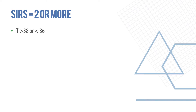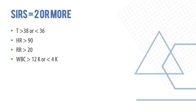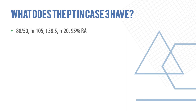SIRS is classified when two or more of the following are present: temperature more than 38°C or less than 36°C, heart rate more than 90, respiratory rate more than 20, or white blood cell count more than 12,000 or less than 4,000. Returning to case 3 — blood pressure 88/50, heart rate 105, temperature 38.5°C, respiratory rate 20, saturation 95% on room air — this patient has septic shock.